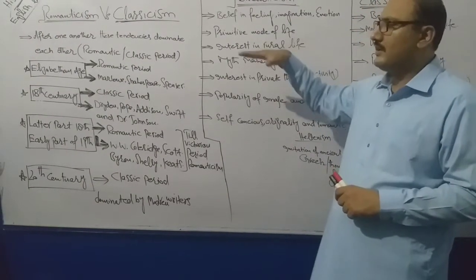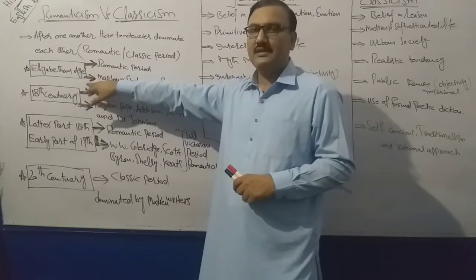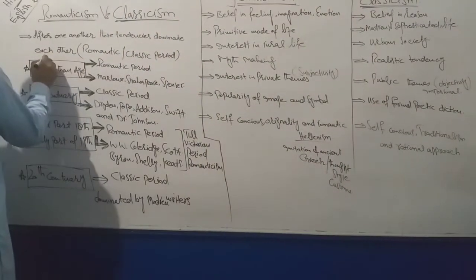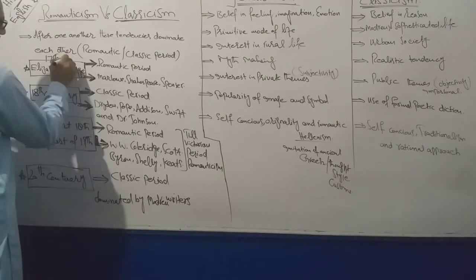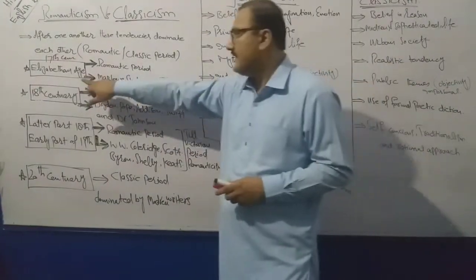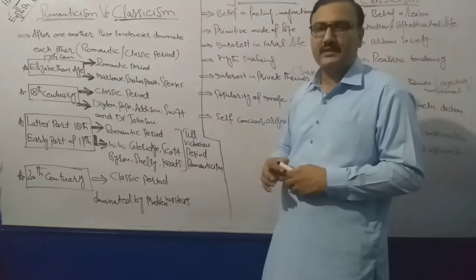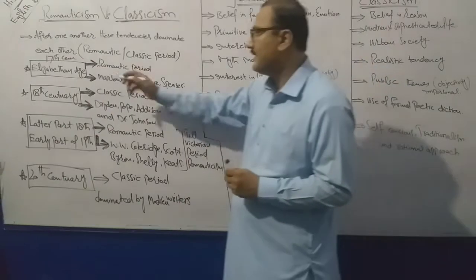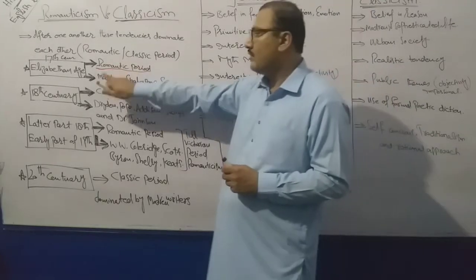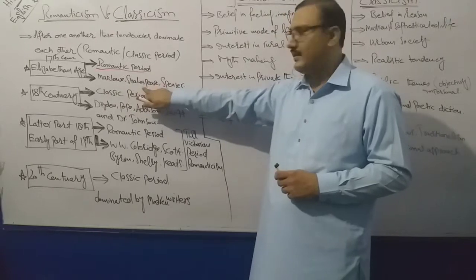First I will tell you what is Romanticism. In this period, Elizabethan age is dominated by Romanticism. This Romantic period was dominated by Romanticism. In this period, the dominant writers were Christopher Marlowe, Shakespeare, Spencer.